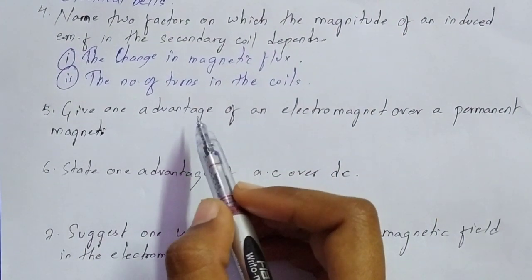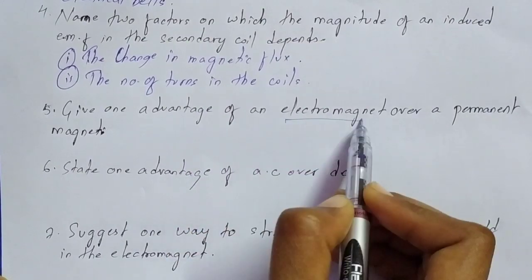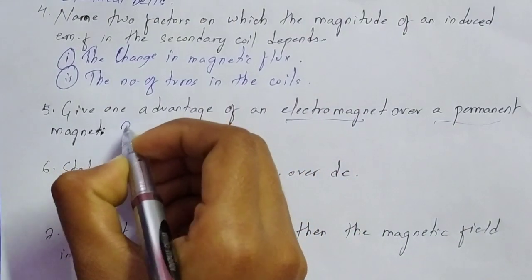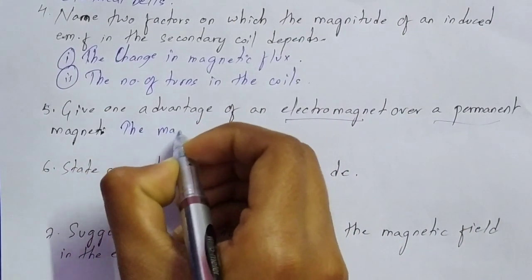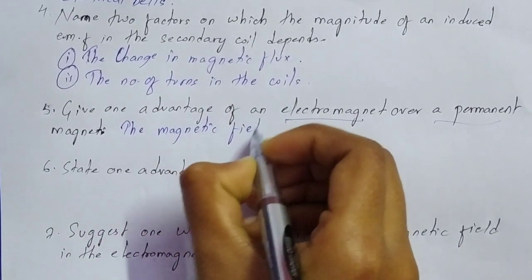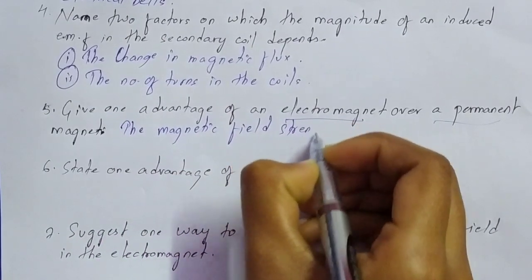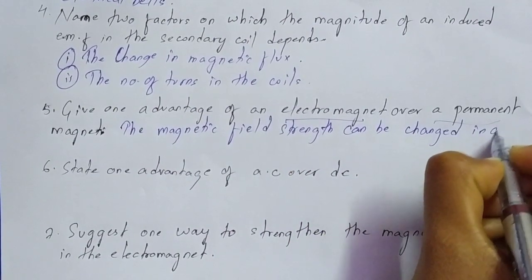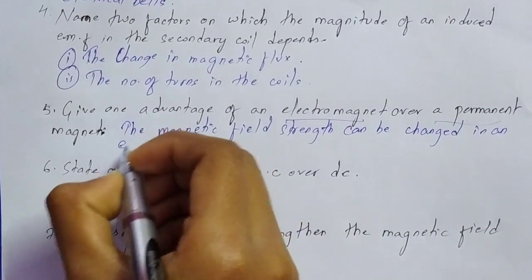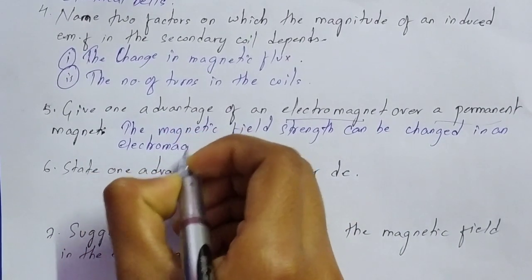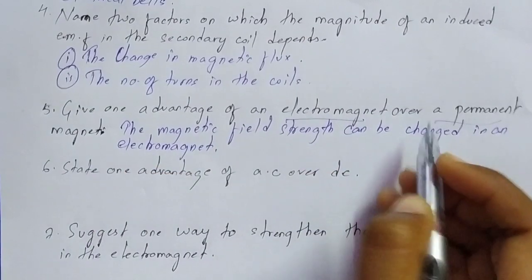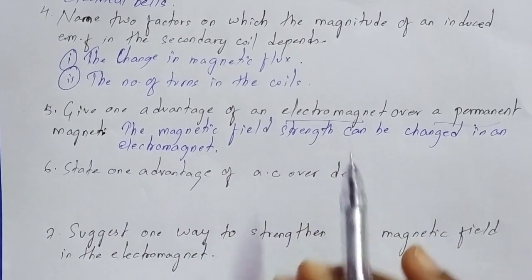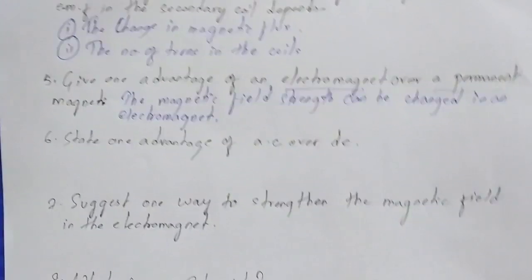Question number five: give one advantage of an electromagnet over a permanent magnet. One advantage is that the magnetic field strength can be changed in an electromagnet.